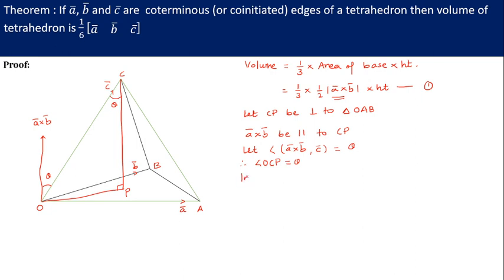Now if I refer triangle OCP, then in triangle OCP, cos theta can be written as - now what is cos theta? It is always the adjacent side that is CP upon hypotenuse that is OC. Now CP can be written as OC into cos theta.